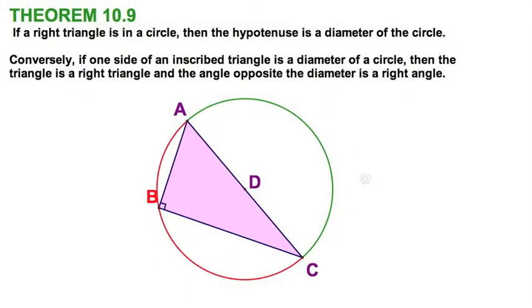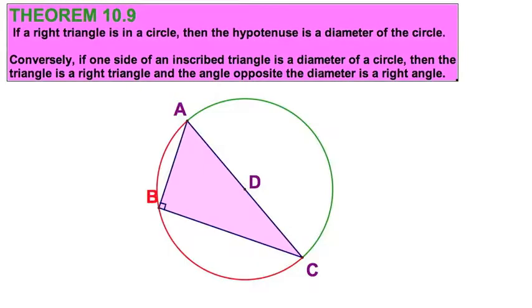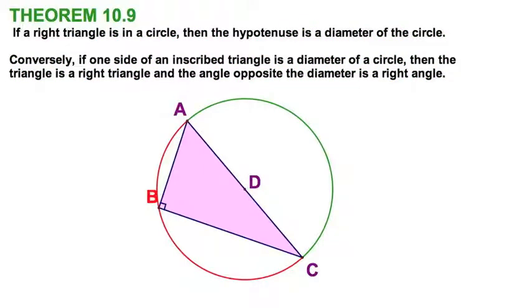A wordy theorem here: if a right triangle is inscribed in a circle, then the hypotenuse is a diameter. That makes sense, and conversely, if one side of an inscribed triangle is a diameter, then that triangle must be a right triangle, and the right angle must be on the vertex opposite the diameter. Well, that makes a lot of sense to me, and you've probably seen it in other textbooks said much more simply.